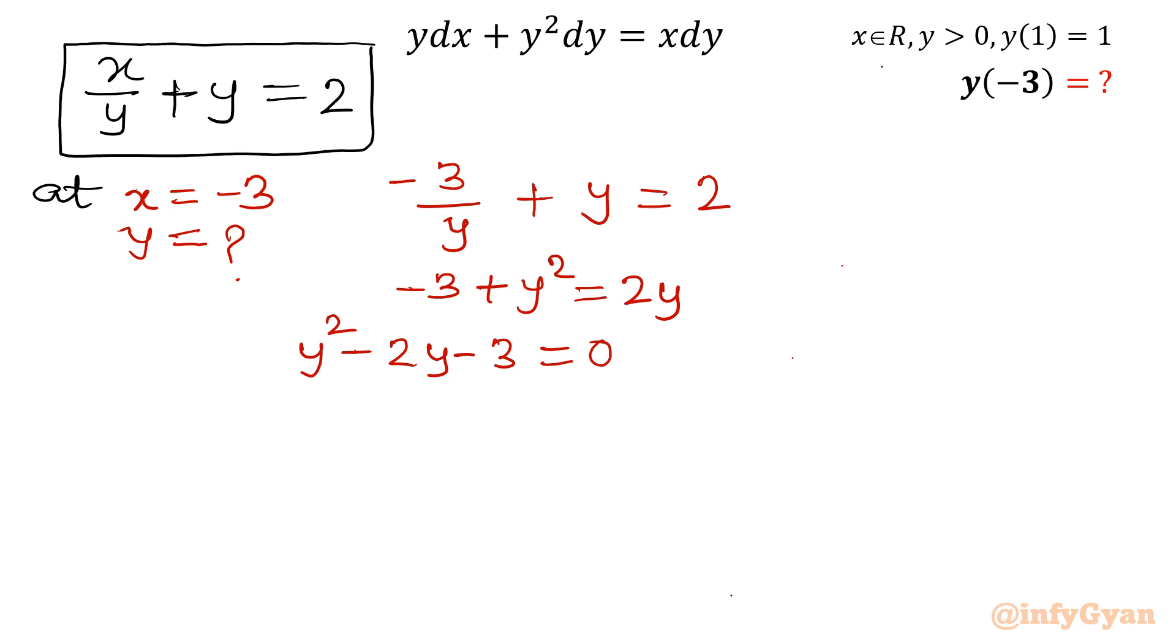Now this is one quadratic equation. I will use the quadratic formula. I will write y equals minus b plus minus square root of b squared minus 4ac over 2a. That formula I will use. I will apply the value, minus b means 2, b squared is negative 2 squared which is 4, minus 4ac where c is negative 3, over 2a, so 1.